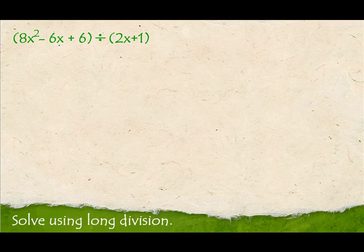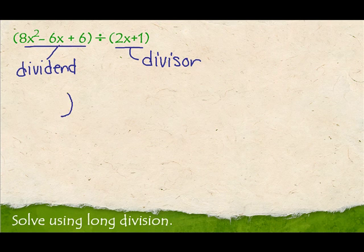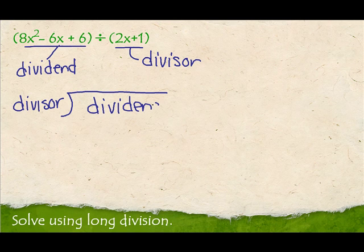Let's solve using long division. Before we do that, let's get some terminology out of the way. This is called the divisor, and this is called the dividend. When you make your division symbol, the divisor goes out front, the dividend goes on the inside, and your quotient ends up on top.